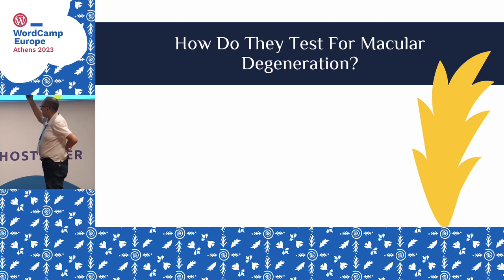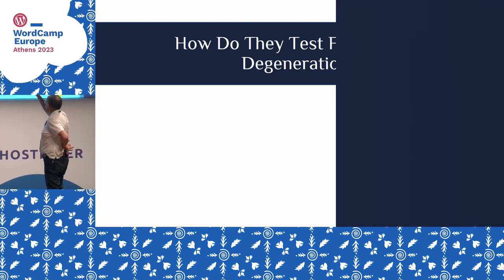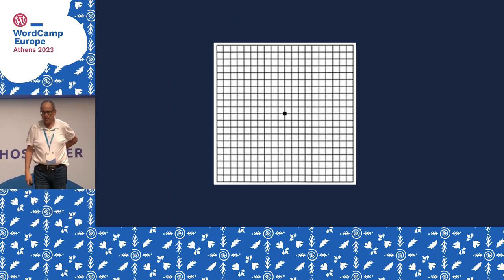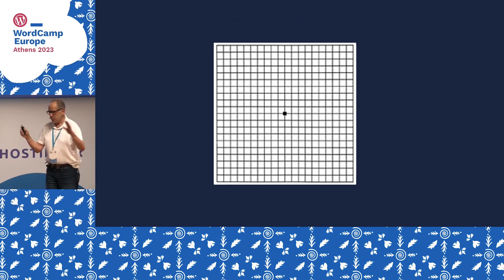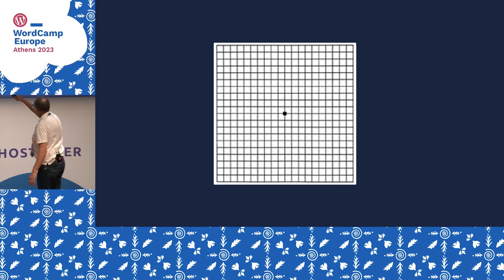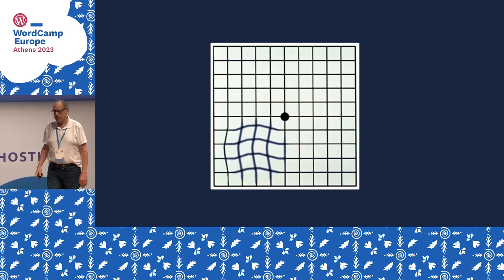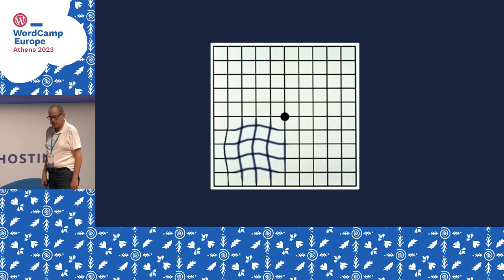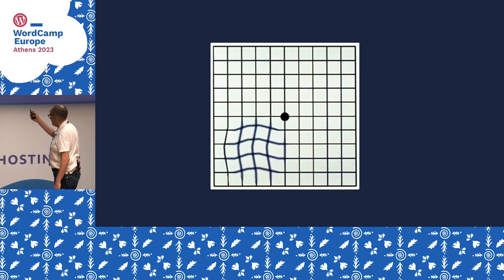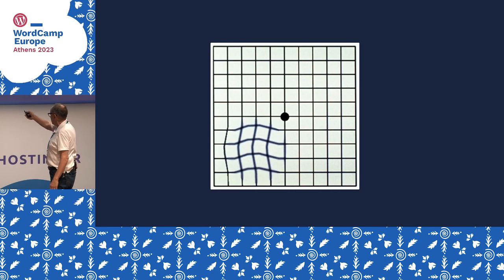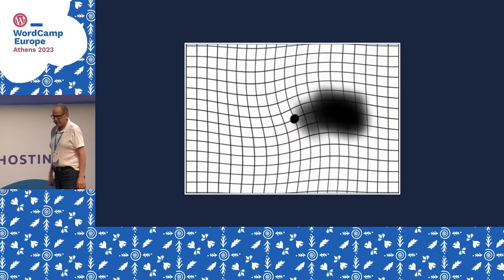How is age-related macular degeneration diagnosed? They use something called the Amsler grid — this has been around forever. If you don't have the problem, you'll see perfectly straight lines, no waviness, everything in nice square boxes. If you can't see the center point, you really have some problems. If you do have macular degeneration, you'll see that one of the quadrants in one eye has really wavy lines — that's not a good sign. As things get worse, it might look even more distorted.